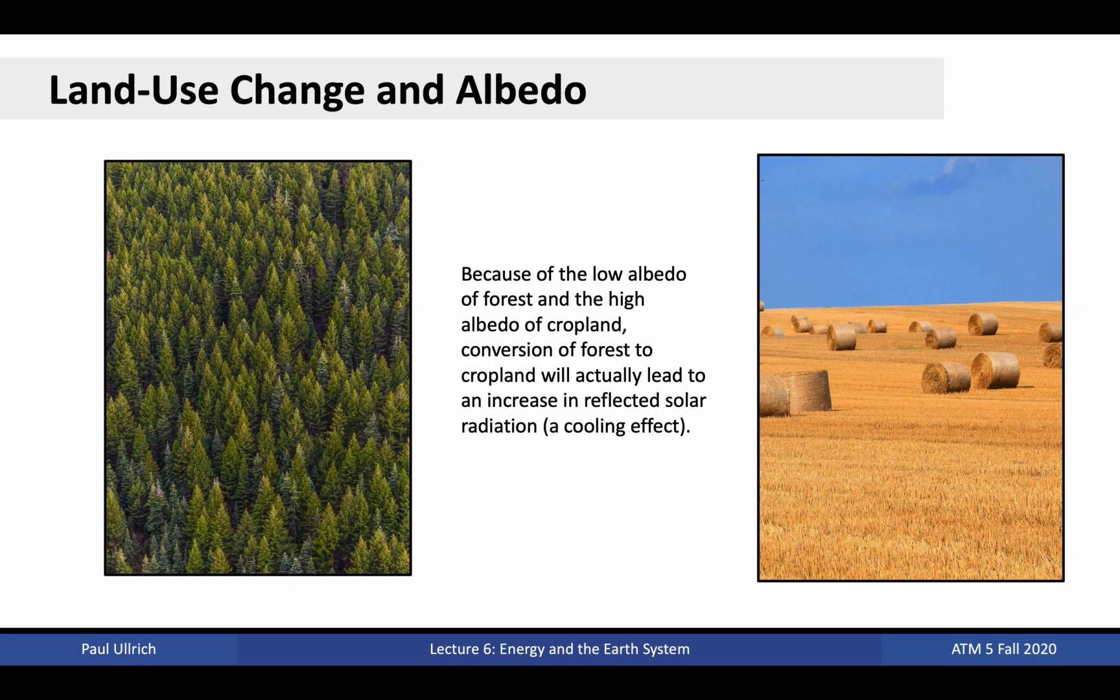As mentioned earlier in class, land use plays an important role in affecting the energy balance of the earth system. The most common form of anthropogenic land use change is the removal of forests for agricultural land. Recall that the albedo of a forest is 5 to 15 percent, whereas the albedo of cropland is 15 to 25 percent. Generally, cropland is more reflective to incoming radiation than forests, and so this change actually tends to have a cooling effect on the planet. Of course, this neglects the release of carbon dioxide into the atmosphere that occurs because of the removal of the forest, which generally occurs via burning.